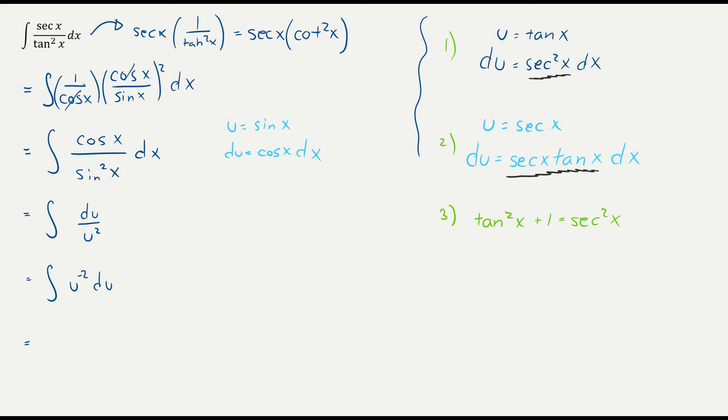Integral of that is if I add 1 to the exponent and divide by that number plus c, which is then negative 1 divided by u plus c. And u is just sine x. So it's negative 1 divided by sine x plus c. And there's my final answer.